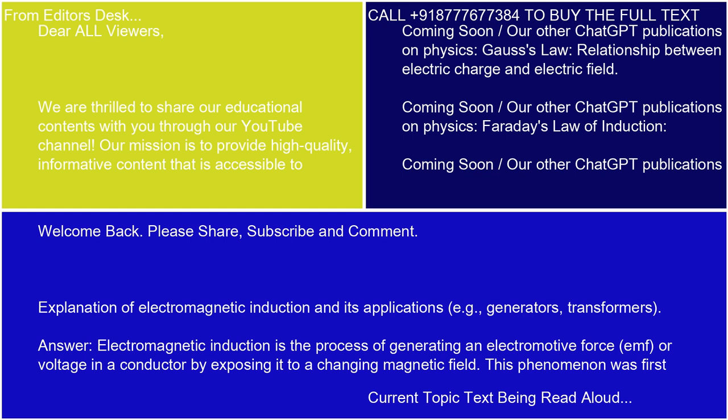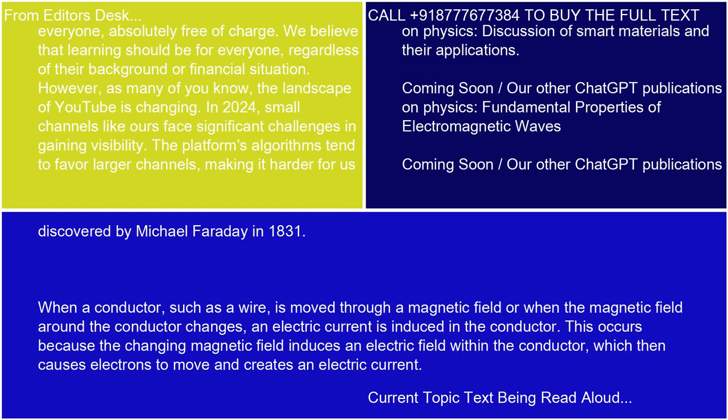Electromagnetic induction is the process of generating an electromotive force (EMF) or voltage in a conductor by exposing it to a changing magnetic field. This phenomenon was first discovered by Michael Faraday in 1831. When a conductor, such as a wire, is moved through a magnetic field or when the magnetic field around the conductor changes, an electric current is induced in the conductor. This occurs because the changing magnetic field induces an electric field within the conductor, which then causes electrons to move and creates an electric current.